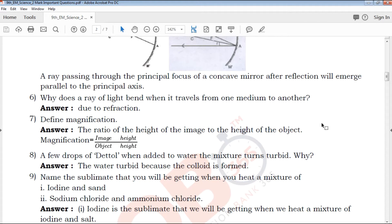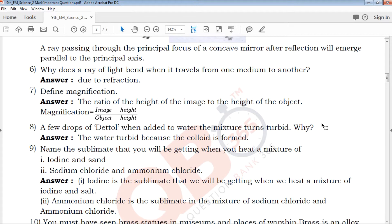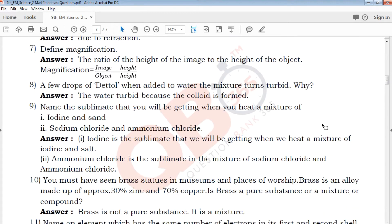Define magnification. Answer: Magnification is the ratio of the height of the image to the height of the object. Magnification equals image height divided by object height. This is easy to mark score.